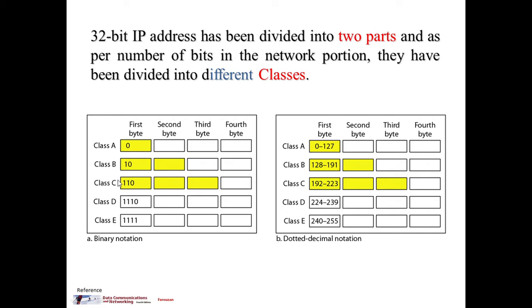In Class A, 1 byte is for the network portion and the remaining 3 bytes are for the host portion. For Class B we have 2 bytes for the network and 2 bytes for the host portion. The range for Class A is from 0 to 127, and Class B and Class C each have their own ranges as discussed in the previous video.